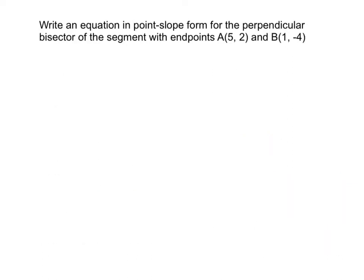Using our past material and our new information about perpendicular bisectors, we want to write an equation in point-slope form for the perpendicular bisector of the segment with endpoints A at 5 comma 2 and B at 1 comma negative 4. We have a few steps to reach our end goal, and the first step is to graph the segment AB.